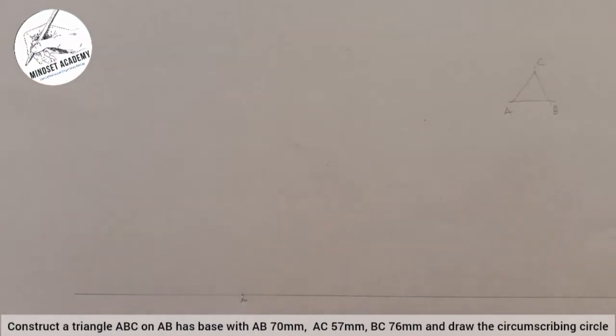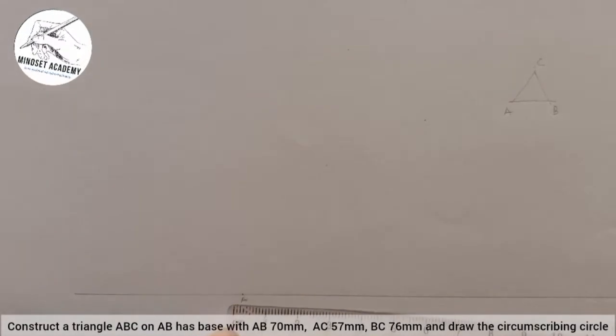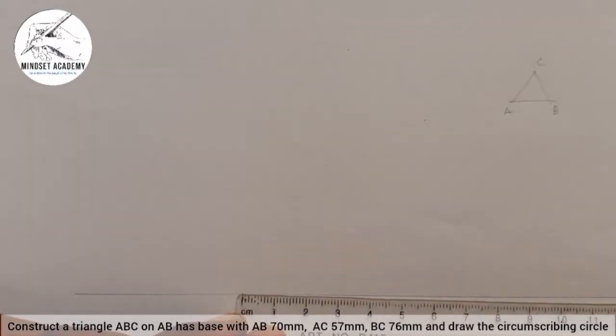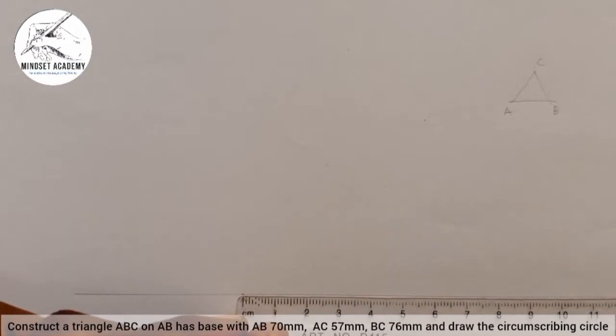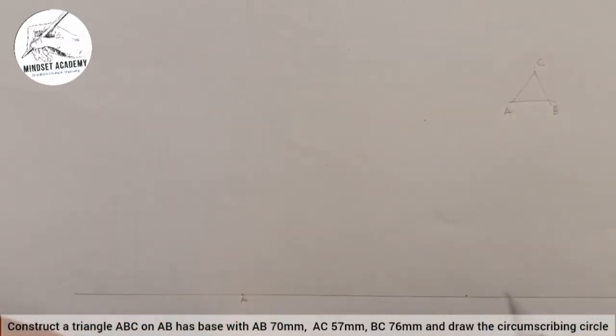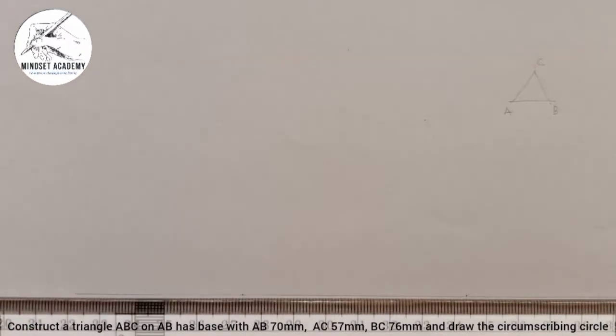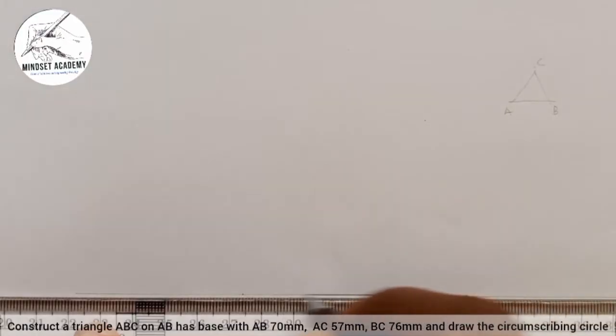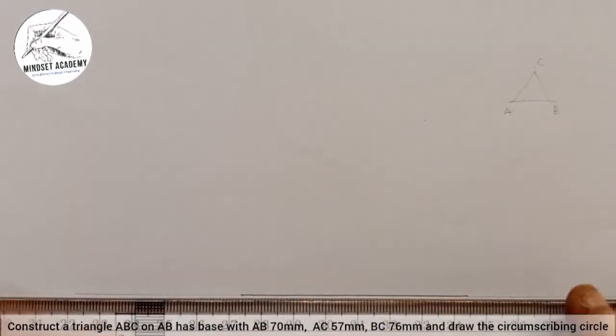Then from that point I am going to measure B which is 70mm away from A. So this is A and this is B, 70mm. I am going to thicken it as the base of the triangle. So that is my AB.